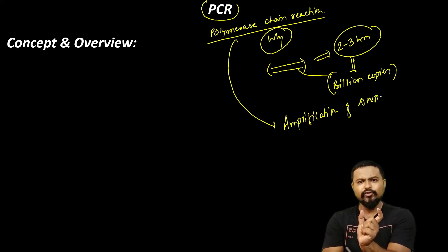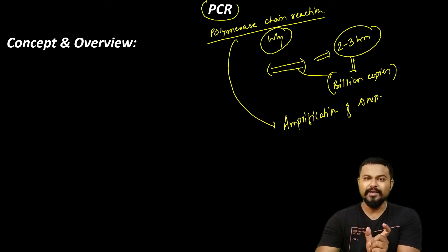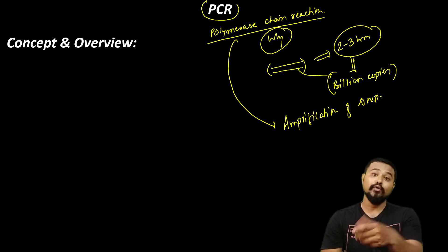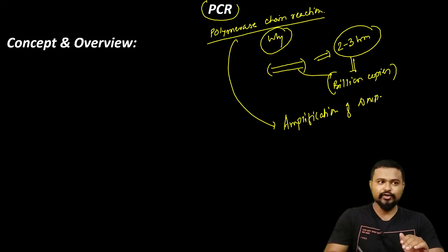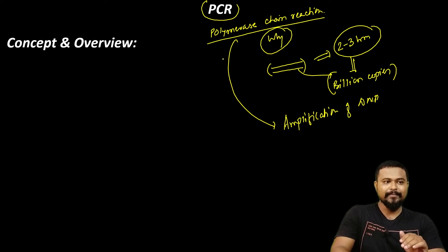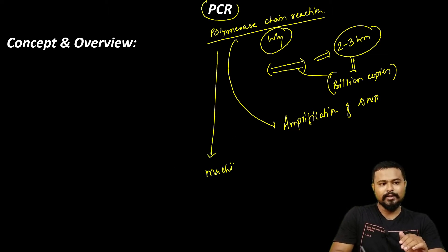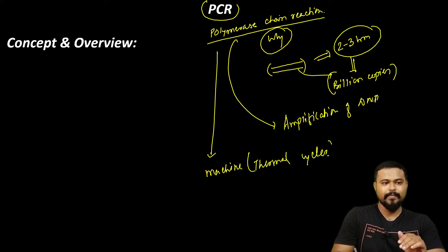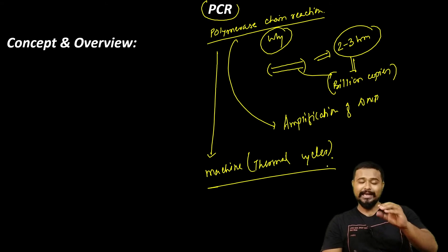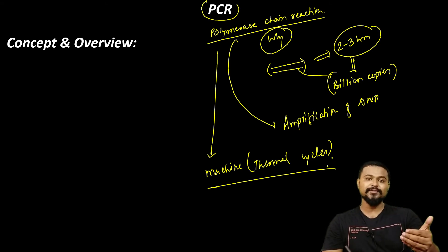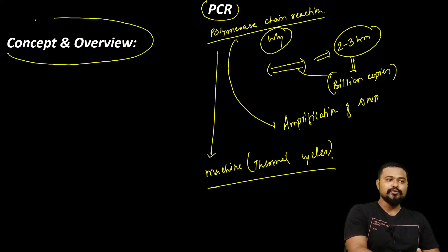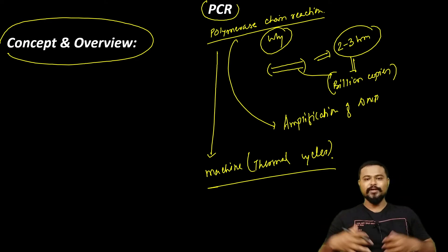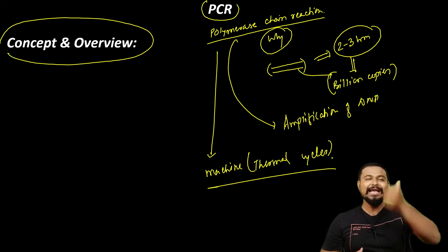So PCR is a reaction through which we can do DNA amplification — amplification of DNA. A single DNA molecule can be copied into billions and billions of identical copies using PCR, Polymerase Chain Reaction. The machine used for this is called a Thermal Cycler. The Thermal Cycler makes billions of copies. Now let me explain the concept and overview, the principle behind the scene.